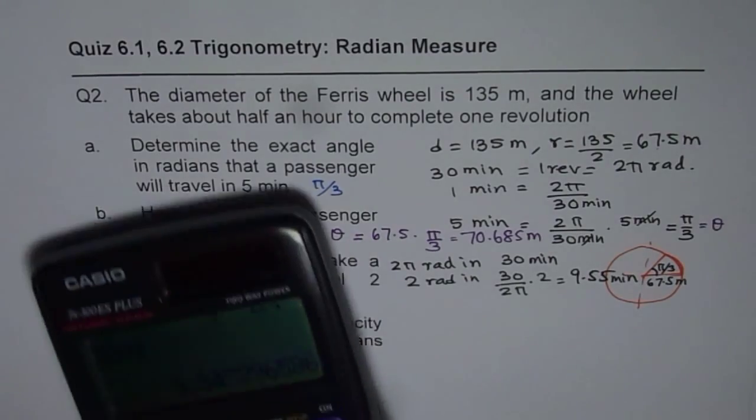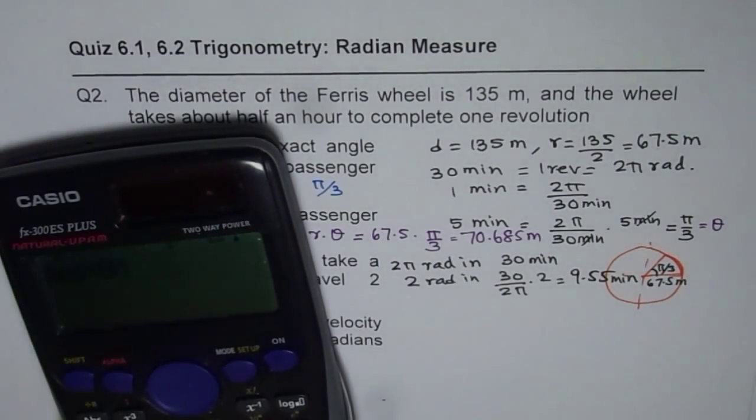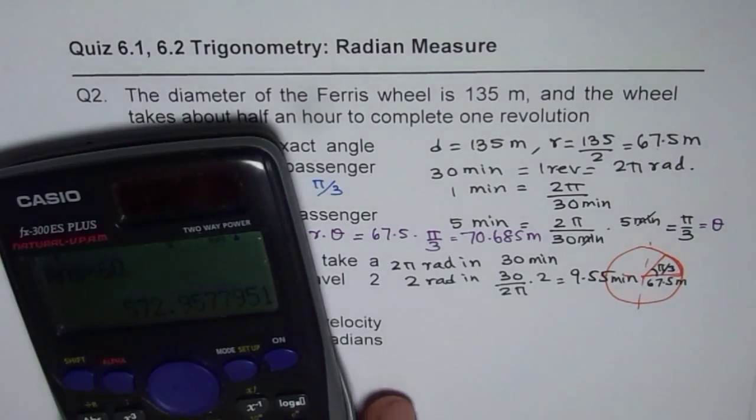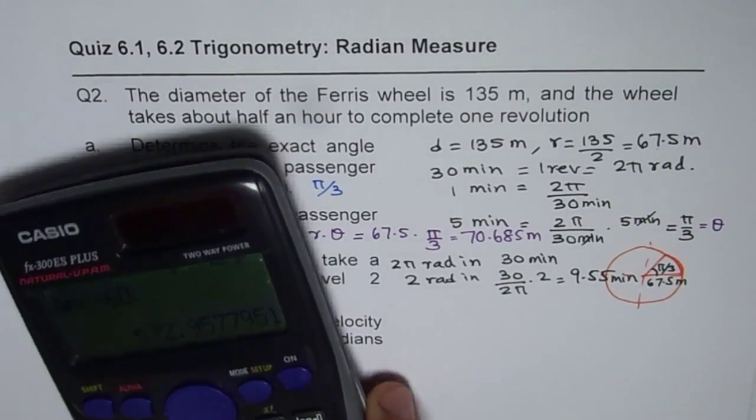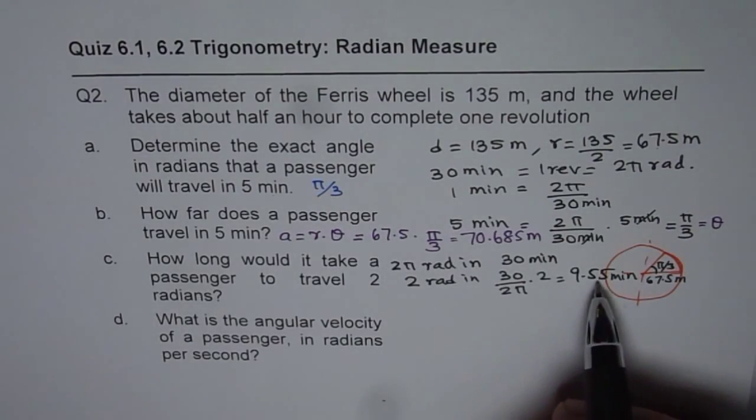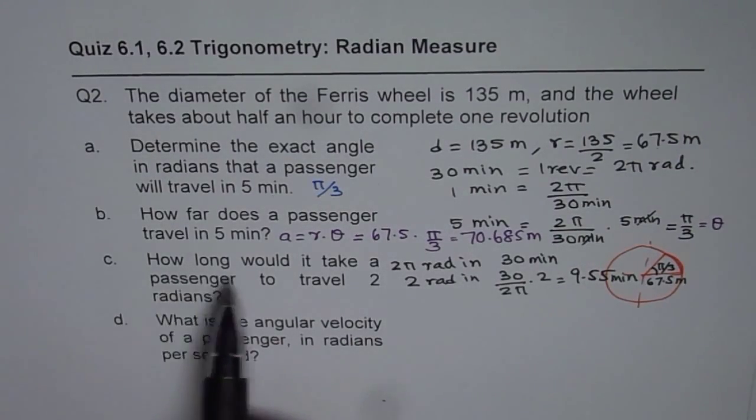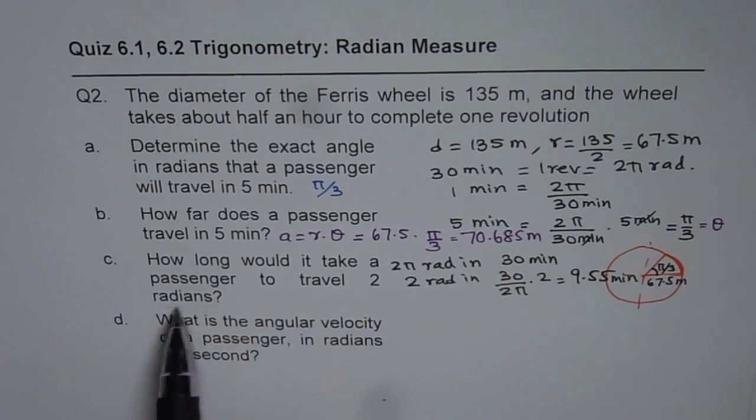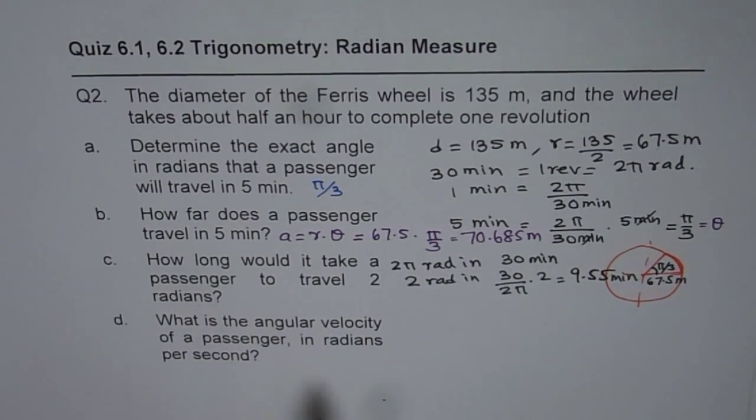Let me multiply this by 60. So you can multiply this by 60 and get seconds, which is 572.9. Anyway, this is better. So it's 9 and a half minutes. So how long would it take a passenger to travel two radians? About nine and a half minutes.